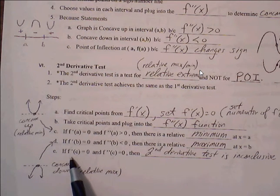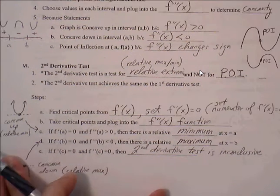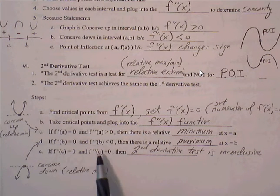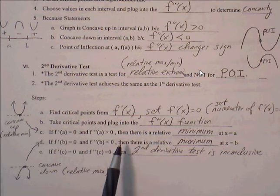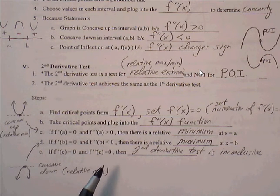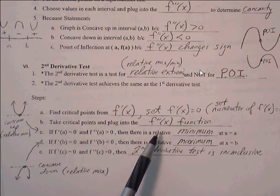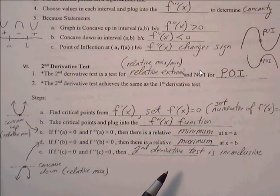If the critical point from f prime gives zero in f double prime, then the second derivative test is inconclusive — we are unable to conclude whether there's a relative max, relative min, or neither, and we would have to resort to another test such as the first derivative test. The second derivative test is probably not going to be used as often as the first derivative test, but sometimes on the AP exam, College Board will create problems that test students' knowledge of the second derivative test.